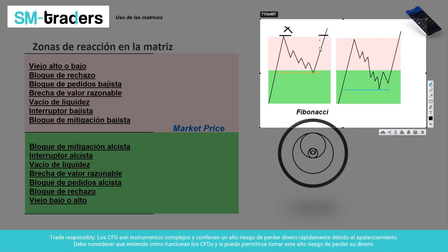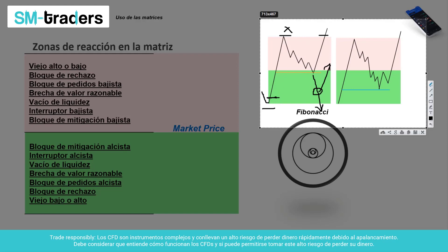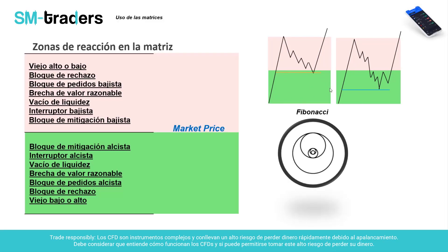Cuando el mercado sube, activa los buy stops y quizás ahí vuelve a retroceder. Todas esas personas que vendieron en la bajada colocan sus stop loss por arriba — eso es liquidez externa. Evidentemente hubo otro grupo de personas que compró al inicio de la tendencia y colocó el stop loss abajo. Es posible, dependiendo del order flow, si el mercado continúa bajando o si esto simplemente llega a ser un retroceso profundo para volver a comprar. Pero te garantizo que el precio va a terminar tomando esos stops si no sacaste beneficios.